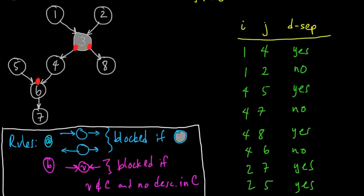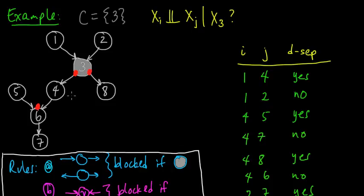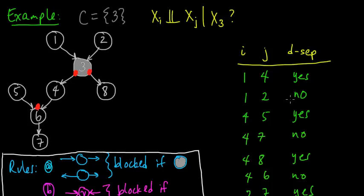We just worked out an example of a particular graph conditioning on a particular set, and we looked at pairs of random variables and checked to see if they're d-separated. Just by annotating this graph in a certain way — using these rules, putting these little stop signs in the appropriate places — we could immediately check whether a pair of random variables was d-separated. Remember, when they're d-separated, that implies they are conditionally independent given C. But if they're not d-separated, that does not necessarily imply that they are conditionally dependent.